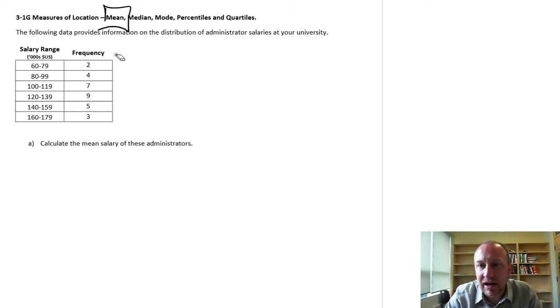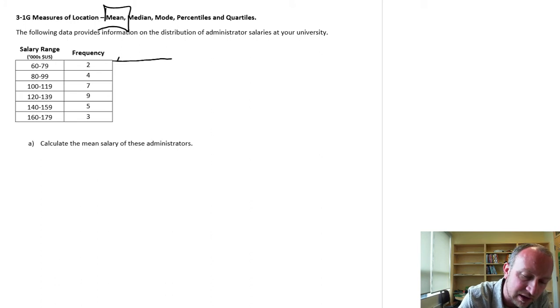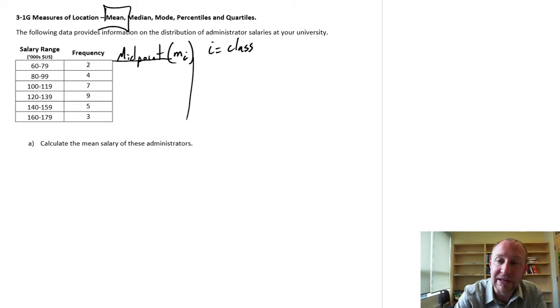So what we need is one more piece of information that we can calculate in order to do this estimate, and that is the midpoint. So I'm going to add a column and we'll calculate the midpoint. The notation that we're going to use is MI and I, where I is going to be a placeholder for the class or the bin or the bucket.